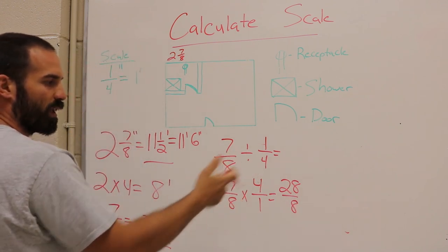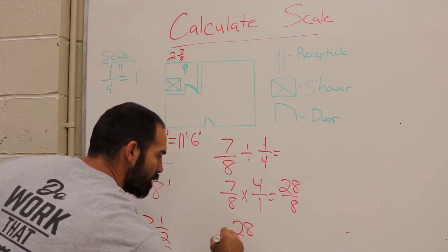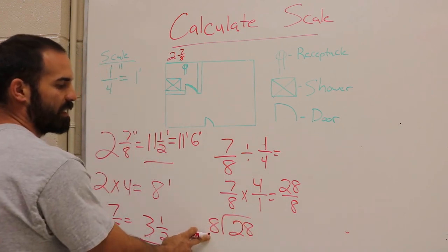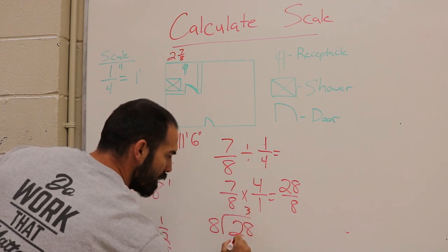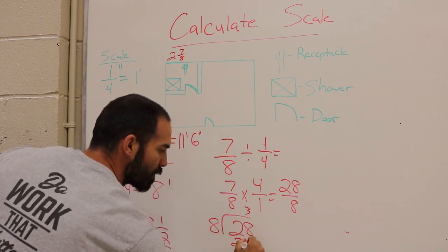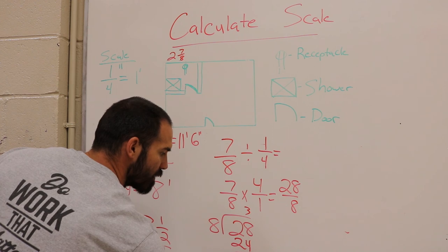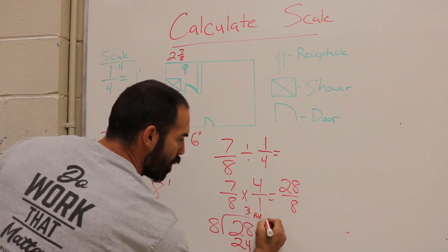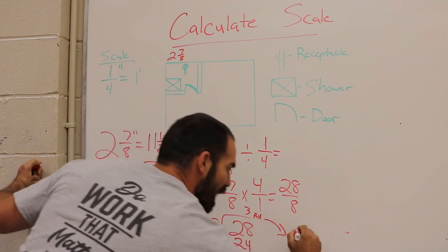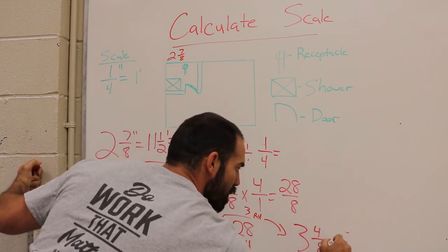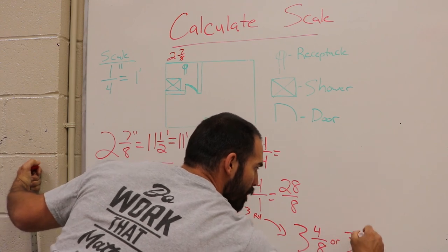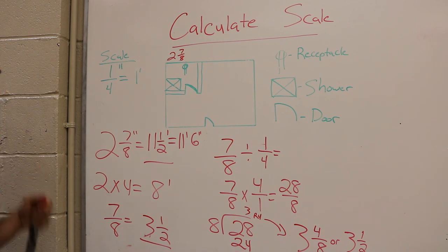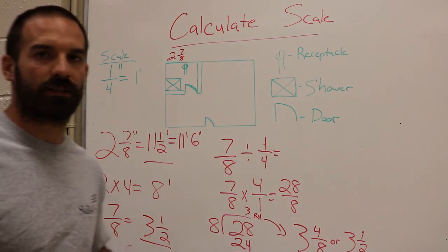So that is pretty much 28 divided by 8, which looks just like this. We know that 8 can go into 28 three times. 3 times 8 is 24, so that gives us 3 remainder 4, which is the same as 3 4/8 or 3 1/2. So we have the same thing. So there's a few different ways to figure that one out.